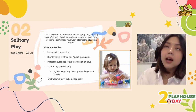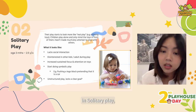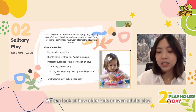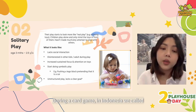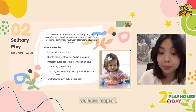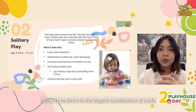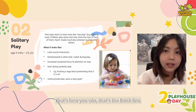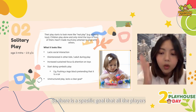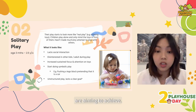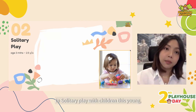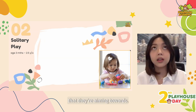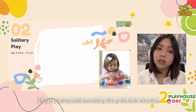What I mean by goal is that unlike more mature and structured play, in solitary play their play doesn't have a finish line they want to reach. We can look at how other kids and even adults play — for example, during a card game. In Indonesia we have Capsa, where each player competes to throw in the biggest combination of cards and the goal is simple: finish all your cards first. That's the finish line, that's how you win. There's a specific goal all players are aiming to achieve. But in solitary play with children this young, there's no such thing — no structure, no goal they're aiming towards. They're playing until something else grabs their attention.